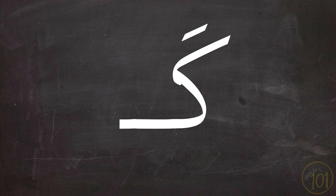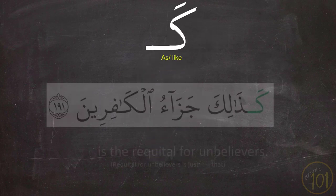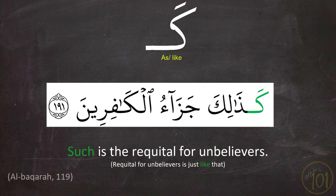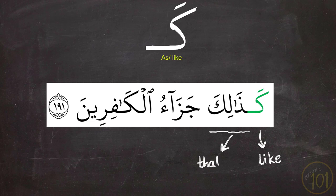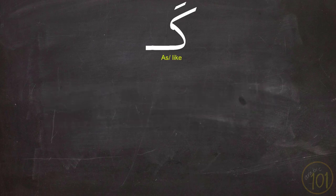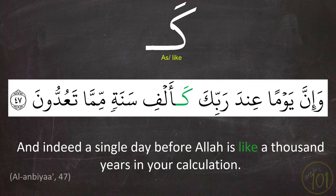Next is كَ, and كَ is one of the straightforward prepositions — it means 'as' or 'like'. Like in these examples: كَذَالِكَ جَزَاءُ الْكَافِرِينَ. We notice here the word كَذَالِكَ, which is one of the most common words in the Holy Qur'an. It is made up of كَ meaning 'as' or 'like', and ذَالِكَ, a word learned in lesson one. Next example: وَإِنَّ يَوْمًا عِنْدَ رَبِّكَ كَأَلْفِ سَنَةٍ مِّمَّا تَعُدُّونَ.